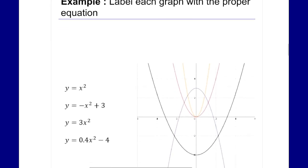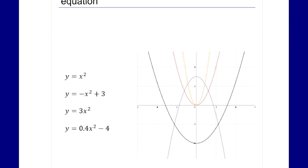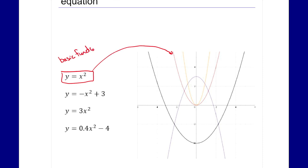We want to label each graph with the proper equation. The first thing we're going to do is look at our four equations and try to match them to the graphs. The hint for the first one: this red graph is y equals x squared. This is our basic quadratic — the simplest form, without changing anything at all.